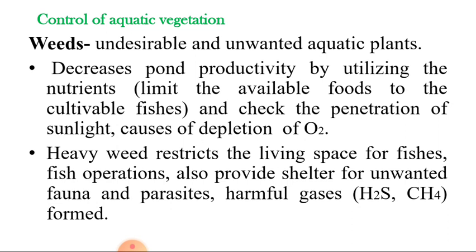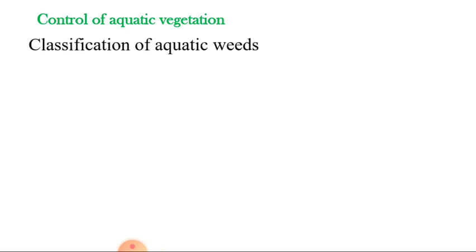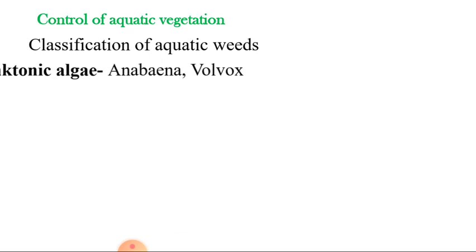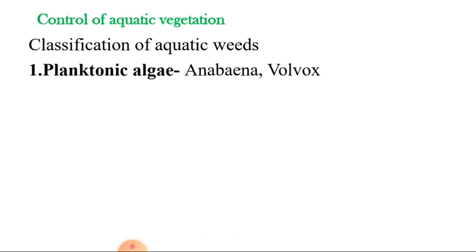We have to control these weeds. They are of different types and can be classified into: first, planktonic algae — these are aquatic weeds, with examples like Anabaena and Volvox.